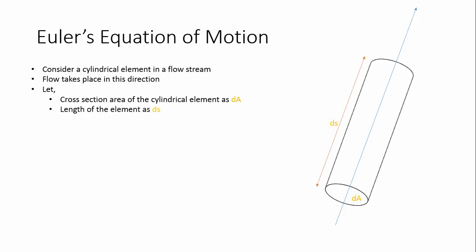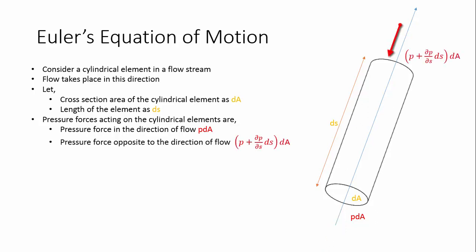If you take the pressure as P, the force acting in the direction of flow should be P times the area of the element dA. The force acting opposite to the direction of flow will have a change in pressure with respect to the length dS; it acts on the same area dA.